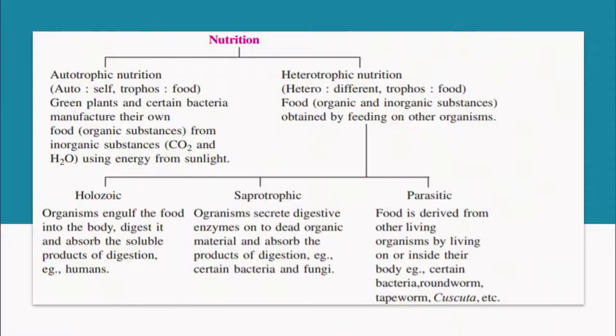Heterotrophic nutrition can again be of three types: holozoic, saprophytic and parasitic. Holozoic organisms engulf food into the body, digest it, and absorb the soluble products of digestion. Humans have a holozoic mode of nutrition.